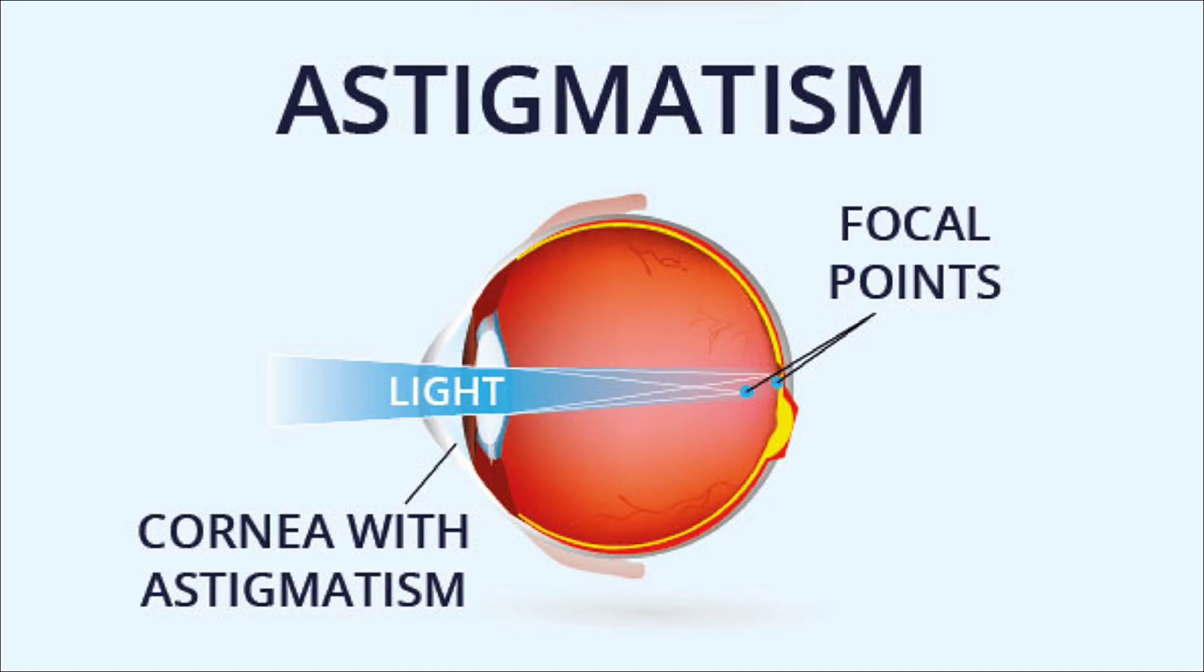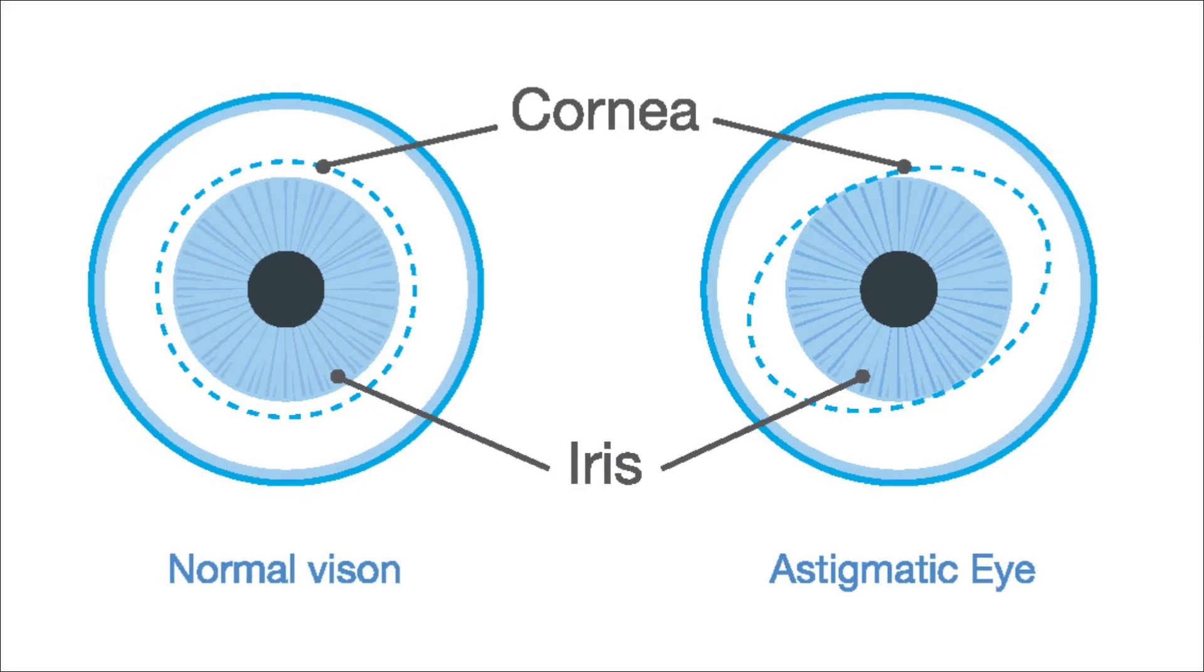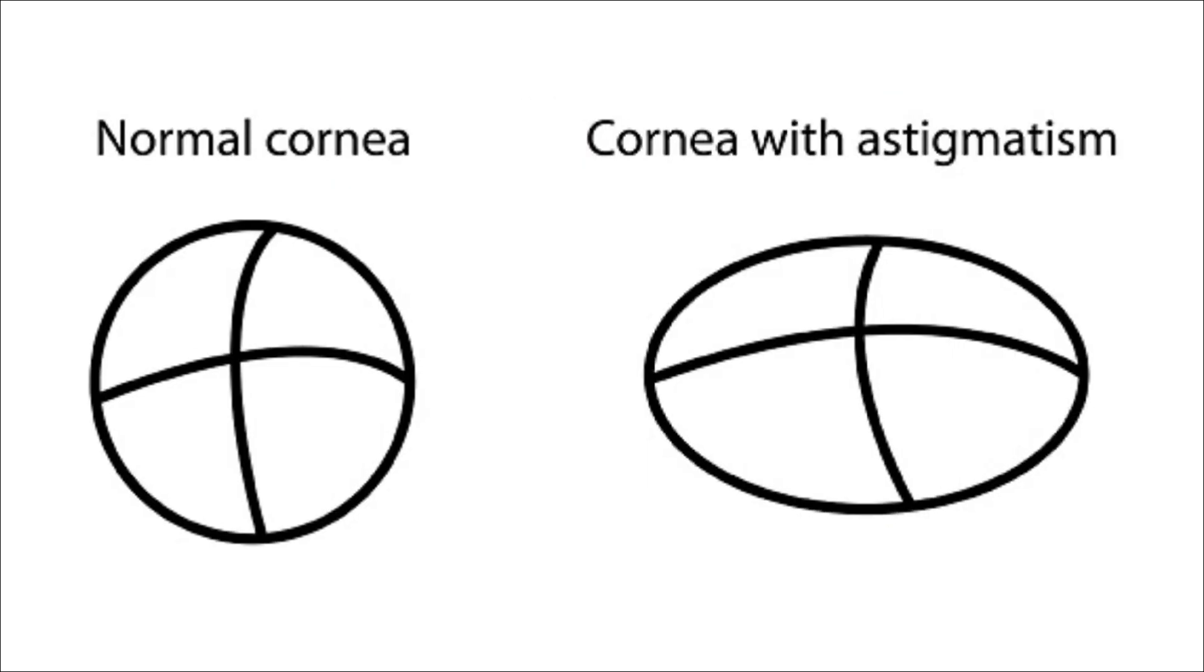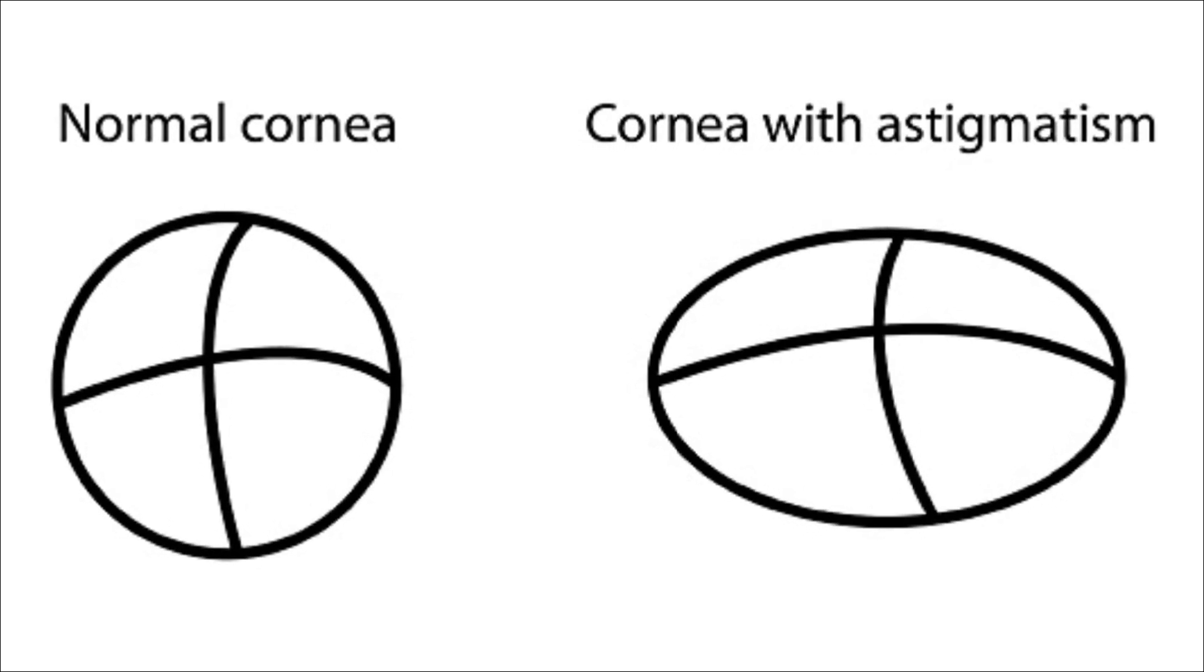However, 44% of people have astigmatism, meaning that the cornea on the front of their eye is shaped differently in different directions, maybe more like a football instead of a circle.